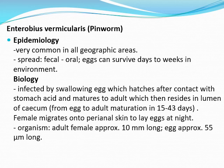The next one - Enterobiasis - is infected by swallowing eggs which hatch after contact with stomach acid and mature to adults which then reside in the lumen of the cecum, from egg to adult maturation. The female migrates onto the perianal skin to lay down their eggs at night. The organism adult female is approximately 10 mm long and the egg is 55 micrometres long.